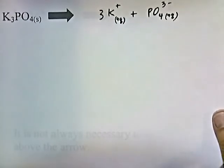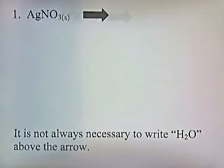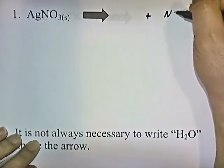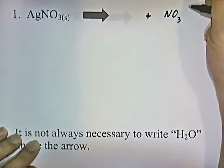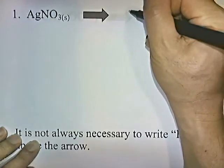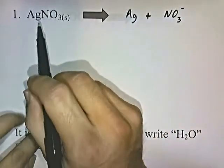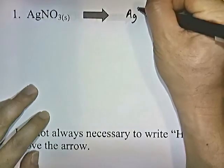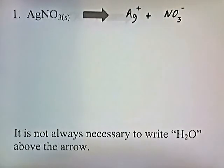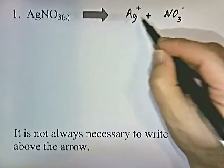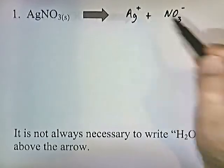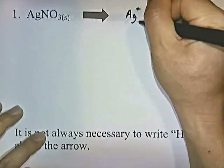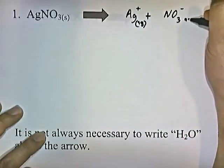Let's go through some examples and show how they dissociate. Silver nitrate: NO3 is a polyatomic ion you should have memorized — nitrate has a negative 1 charge. Ag is silver. In ionic compounds, the total charge has to be 0, so if nitrate has a negative 1 charge, silver has to be a plus 1 charge. Silver is one of those transition elements whose oxidation state you should have memorized — it's plus 1. That is how silver nitrate dissociates.